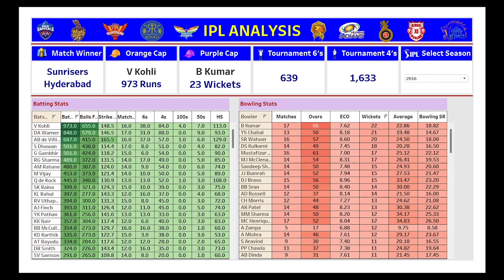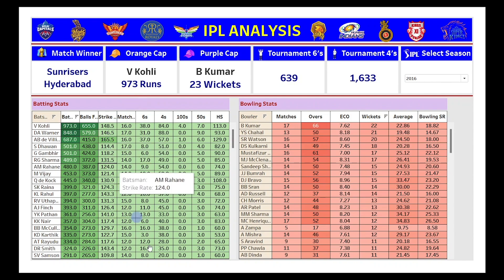Moving to the second dashboard, the KPIs are the same as the first dashboard. What we've added here are stats for batting and bowling. The first chart shows batting stats — how many runs a batsman has scored, balls faced, strike rate, matches played, sixes and fours hit, centuries, half centuries, and his highest score.